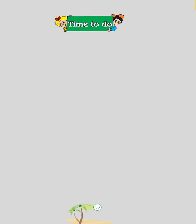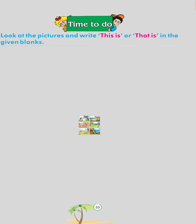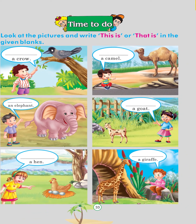Time to do. Look at the pictures and write 'this is' or 'that is' in the given blanks: This is a crow. That is a camel. This is an elephant. That is a goat. This is a hen. That is a giraffe.